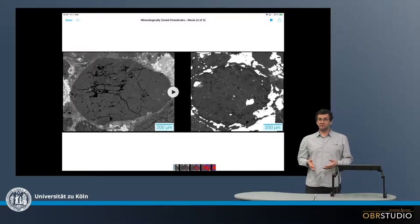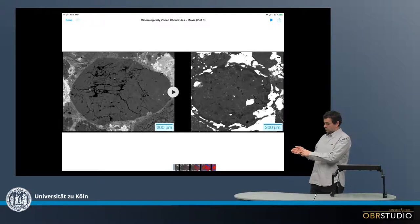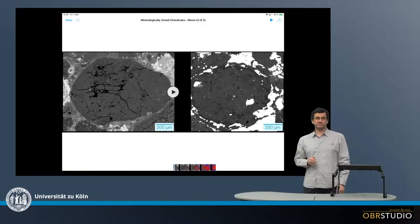Chondrites contain abundant mineralogically zoned chondrules. These chondrules have an olivine core surrounded by a layer of low-calcium pyroxene.